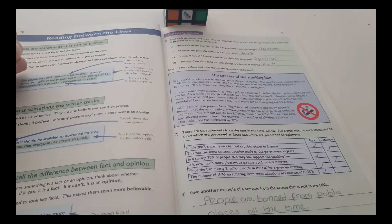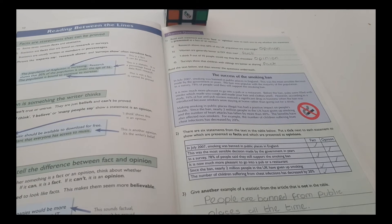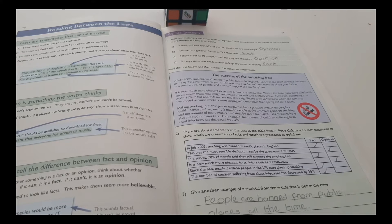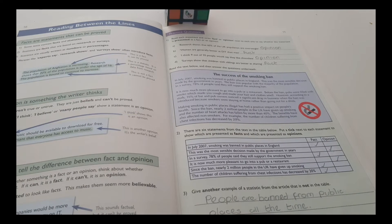There are six statements from the text in the table below. Put a tick next to each statement to show which are presented as facts and which are presented as opinions. In July 2007, smoking was banned in public places in England. Fact. This was the most sensible decision made by the government in years. Opinion.